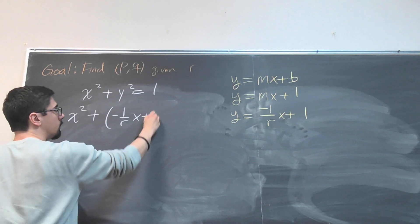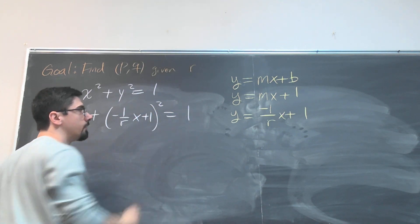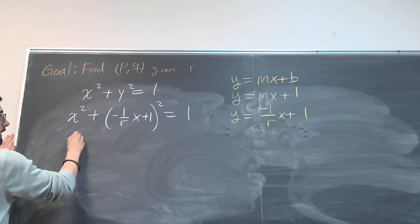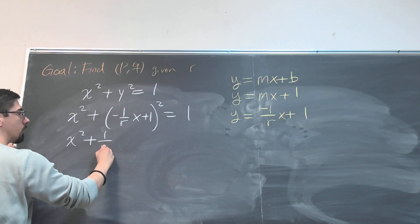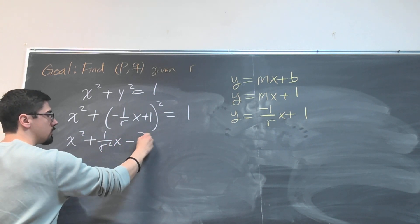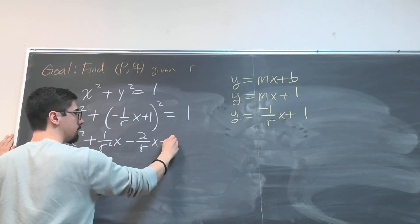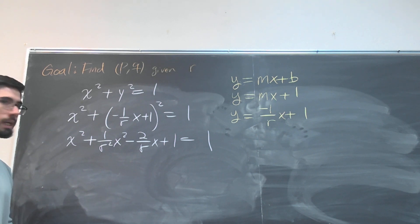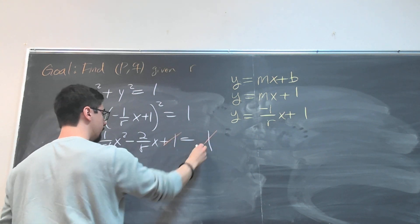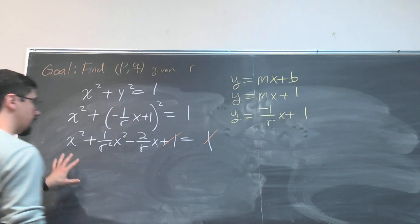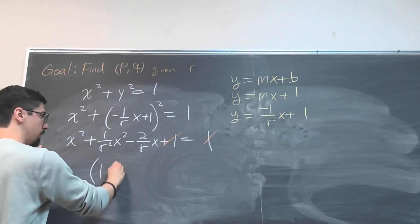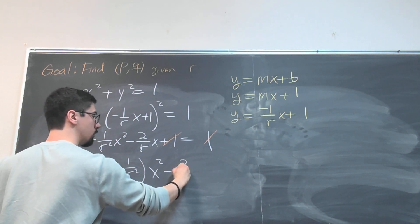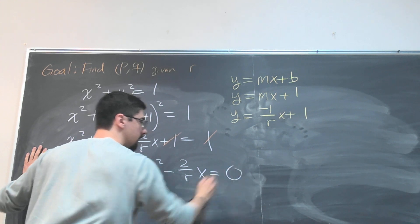So we can rewrite this as x squared plus (-1/r)x plus 1 squared equals 1. And now we just go ahead and do some algebra here. So this becomes x squared plus (1/r²)x² minus (2/r)x plus 1 equals 1. We have positive 1s on both sides so these can cancel. And combining like terms we now have (1 + 1/r²)x² minus (2/r)x equals 0.